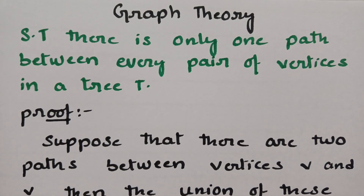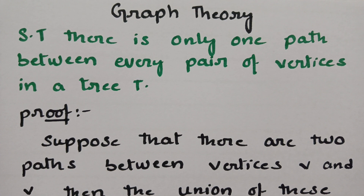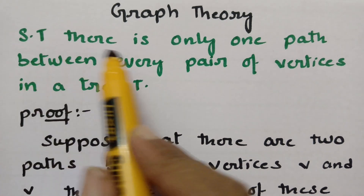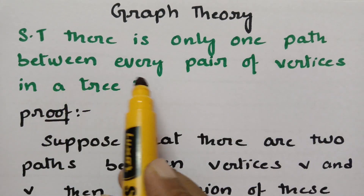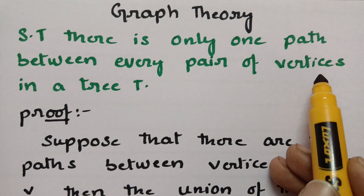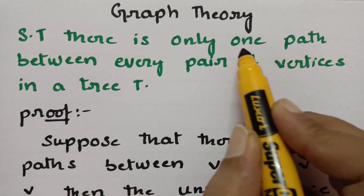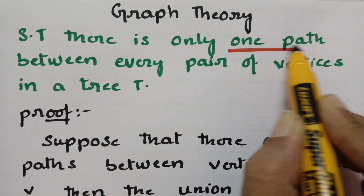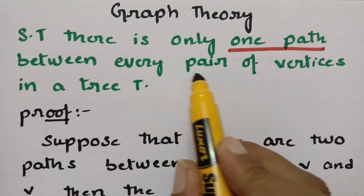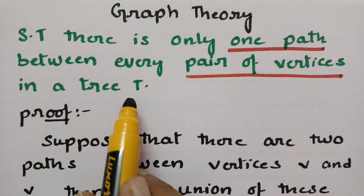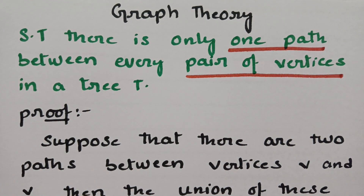This is also the most important theorem, repeatedly asked as a question from graph theory. Let us check this theorem here. The statement is: show that there is only one path between every pair of vertices in a tree. We have to prove this.